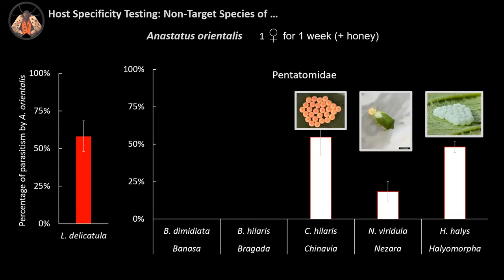We also exposed this parasitoid to the Pentatomidae family. Again, in red are our controls — the percentage of parasitism on spotted lanternfly — and in white the percentage of parasitism on Pentatomidae hosts. Anastatus orientalis was able to parasitize BMSB, Nezara, and the native Chinavia hilaris.